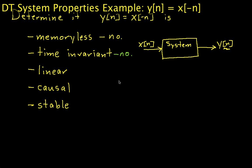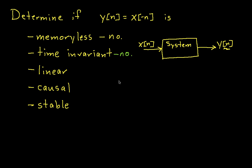In part 1, we determined that the system is not memoryless and that the system is not time-invariant. In this part, we'll be able to determine if it's linear, causal, and stable. So, let's go ahead and look at whether or not the system is linear.